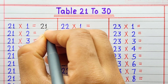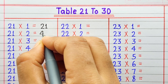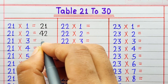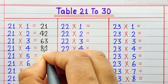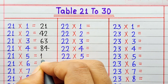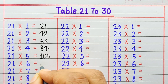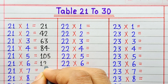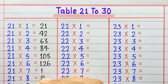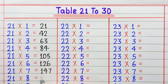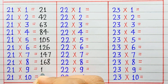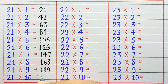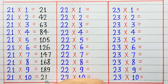21 1 ja 21. 21 2 ja 42. 21 3 ja 63. 21 4 ja 84. 21 5 ja 105. 21 6 ja 126. 21 7 ja 147. 21 8 ja 168. 21 9 ja 189. 21 10 ja 210.